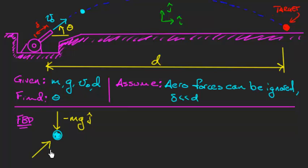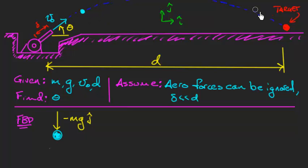We don't include the cannon's propulsive force because we're given the velocity of the cannonball right when it exits the cannon. We concern ourselves only with the flight from leaving the barrel all the way to hitting the target. What happened before the cannonball exits — the explosion, the compressed air — doesn't matter since we already have all the information we need at the exit. Once out of the barrel, the only force is gravity. Another common mistake is putting the initial velocity on the free body diagram — that does not go there.